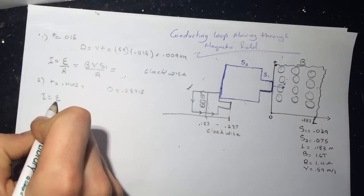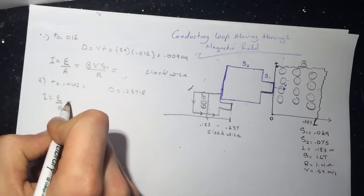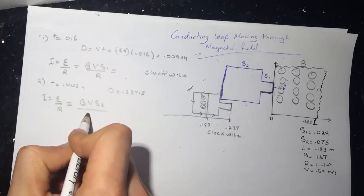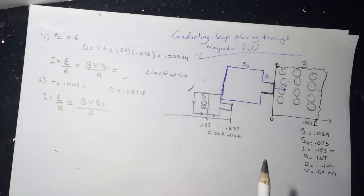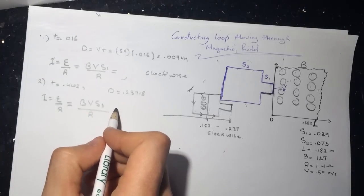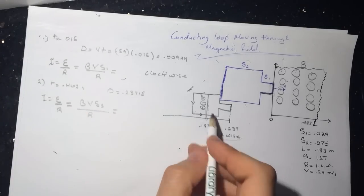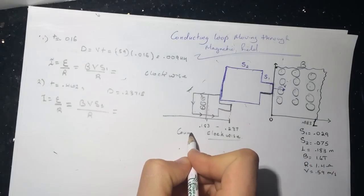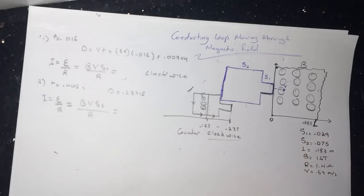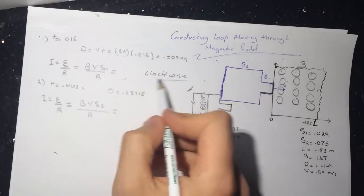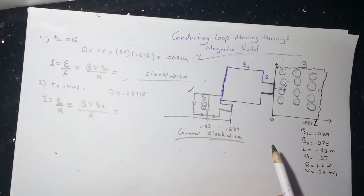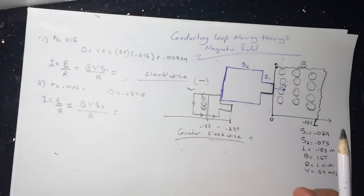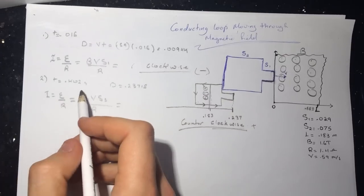So we'll do the same, which is I equal EMF over R. This is BV, this is S2 over R. Don't forget, this is counterclockwise. This is clockwise, this is counterclockwise. And in the question, this is defined to be positive, and this is defined to be negative.